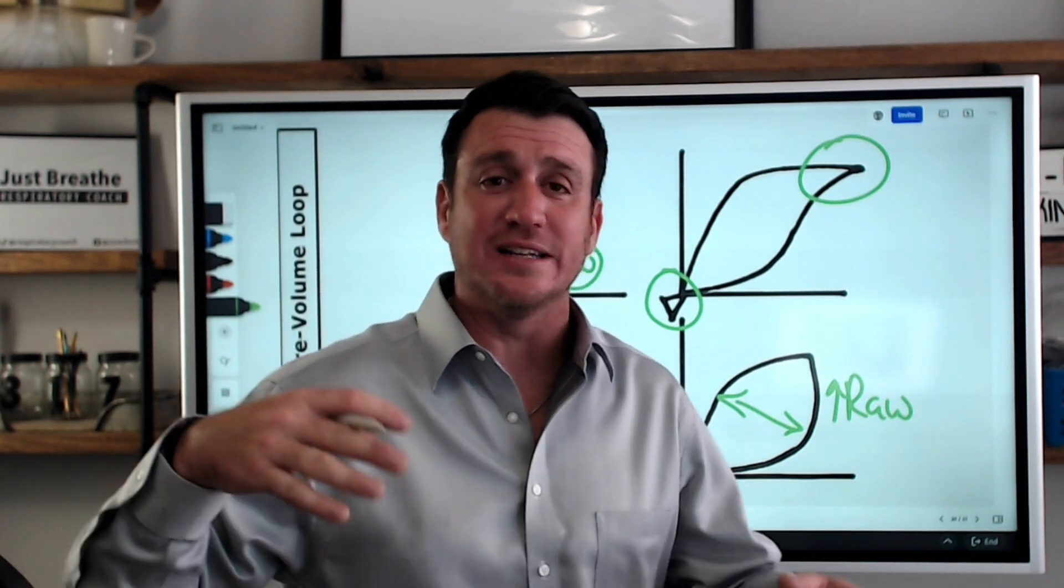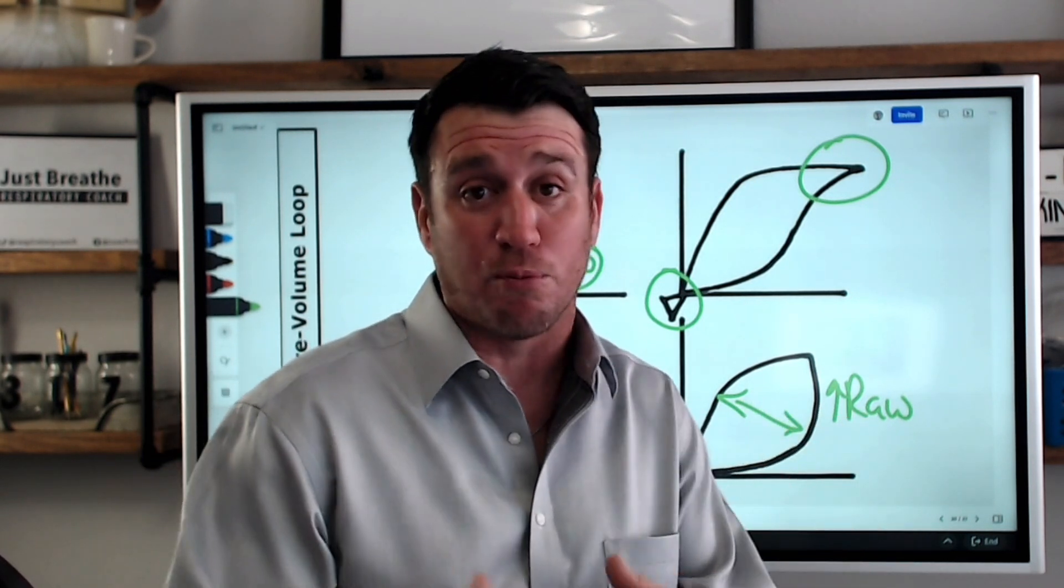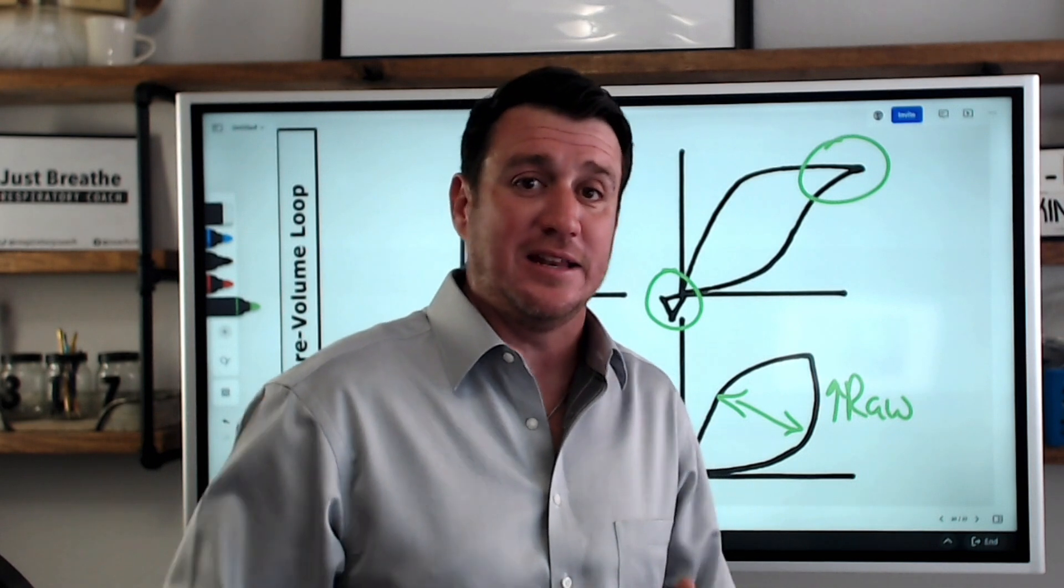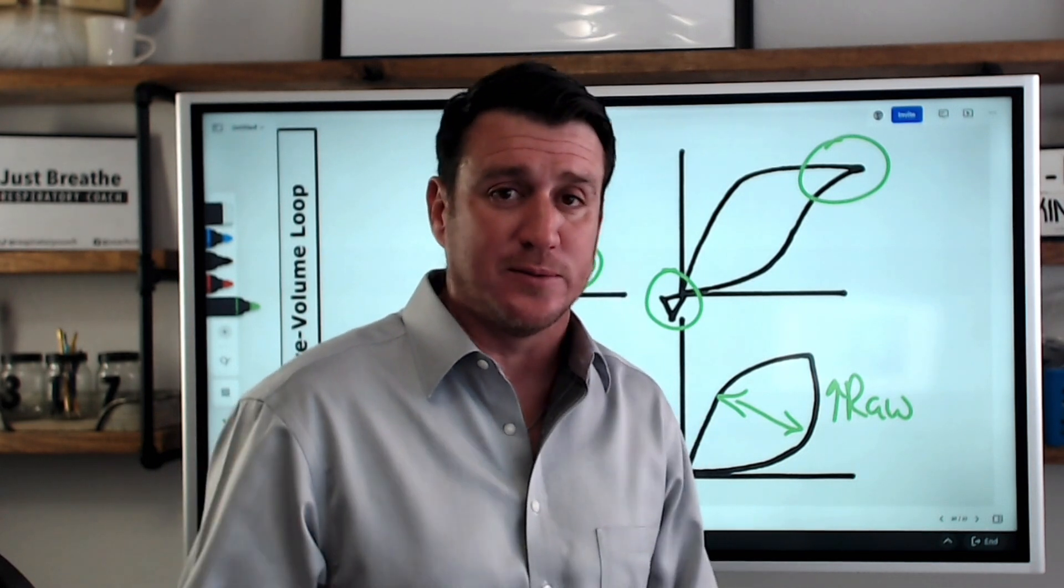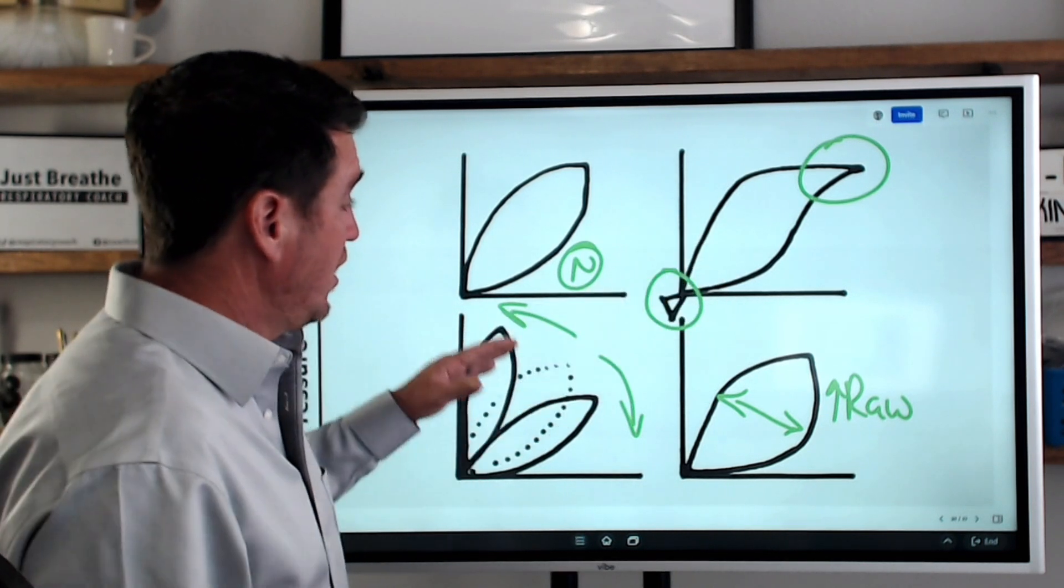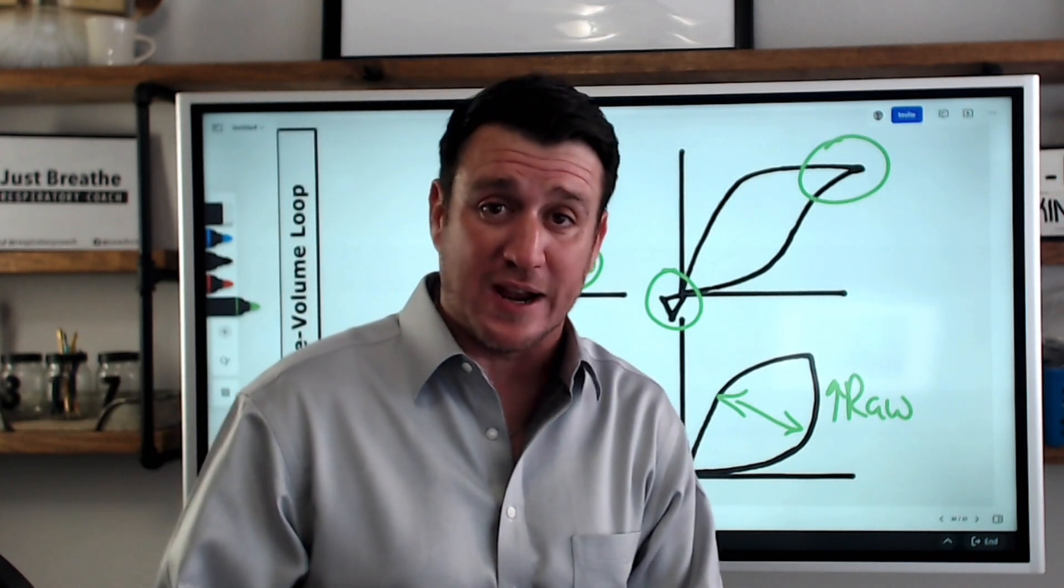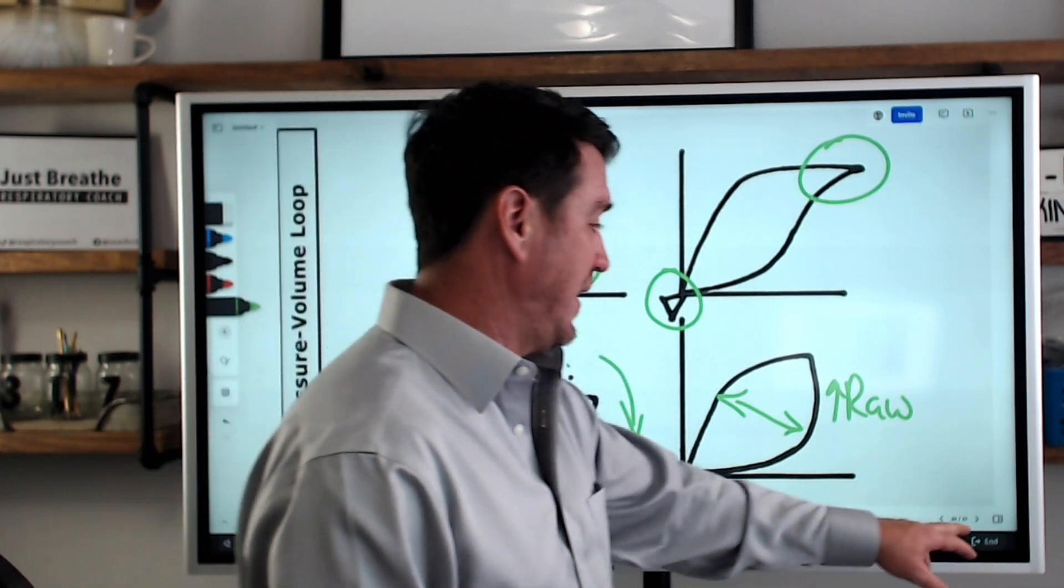Now, as you dive further into this, we can talk more about finding optimal PEEP or at least optimal PEEP ranges in usage with other markers of optimal PEEP. But for the most part, those are the one, two, three, four points of the pressure volume loop you need to be able to recognize when taking care of your patients.